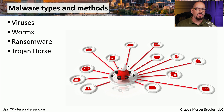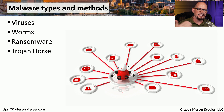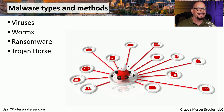A trojan horse is malware that gets on your system by pretending that it's something else. You could be presented with an executable that says it's a game. When you click that executable, it installs software that does appear to be a game, but behind the scenes, there is malware that's infecting your system.